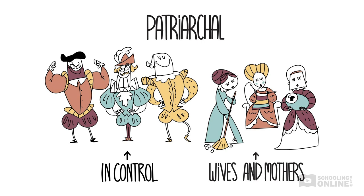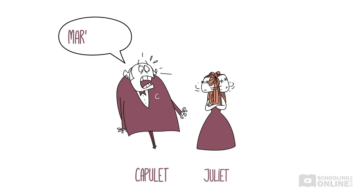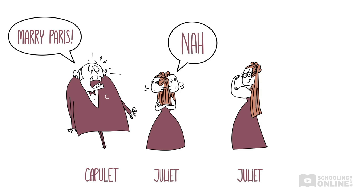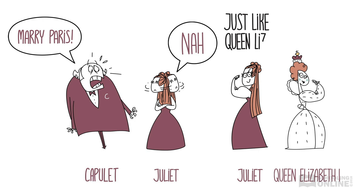Women's only purpose in life was to become dutiful wives and mothers. That's why Capulet expects Juliet to obey him when he tells her to marry Paris, and why he is so shocked when she disobeys. This makes Juliet a pretty rebellious and strong character. Shakespeare uses her to challenge the dominant patriarchal framework of the family.